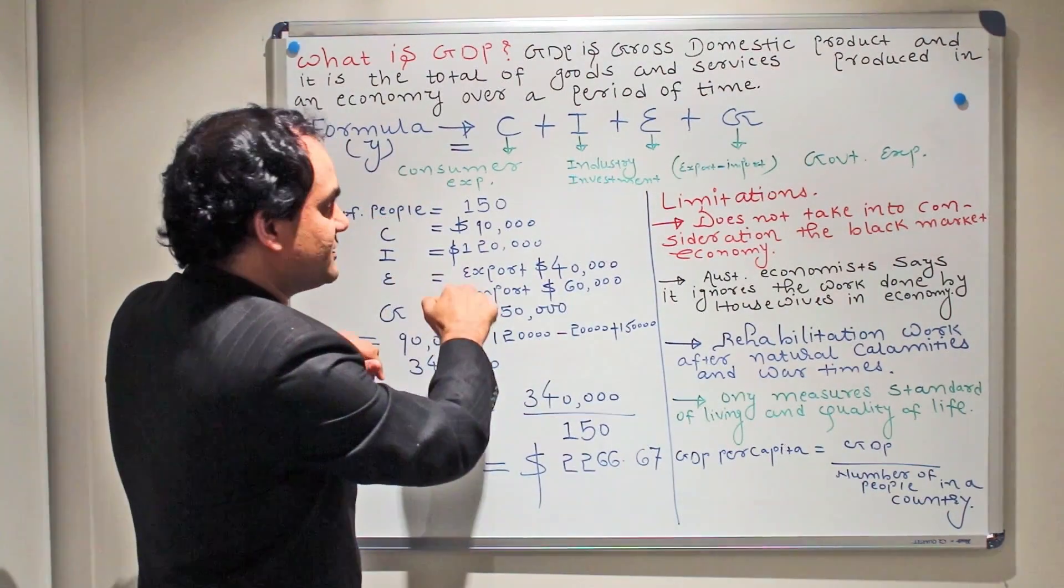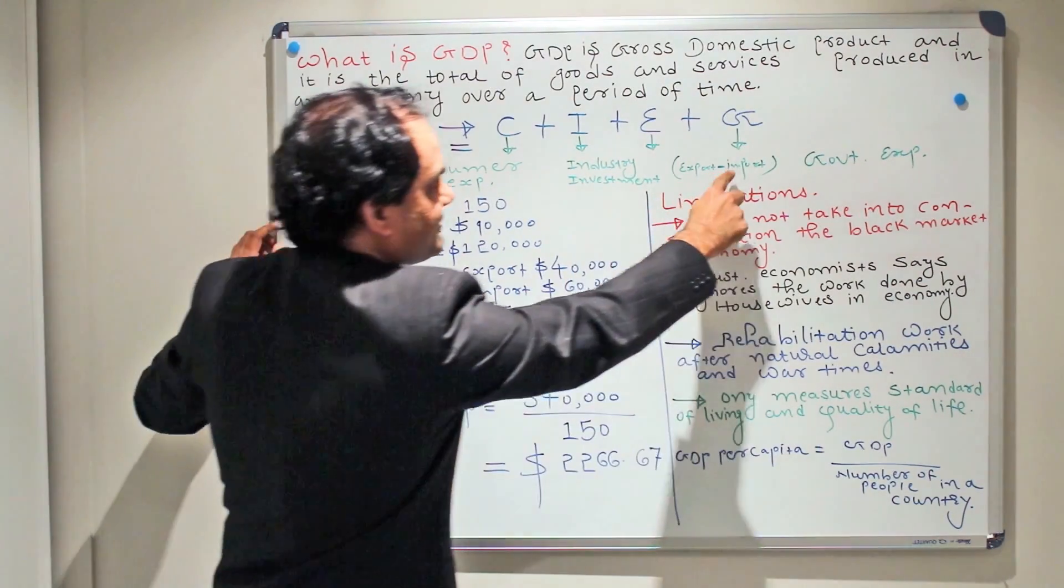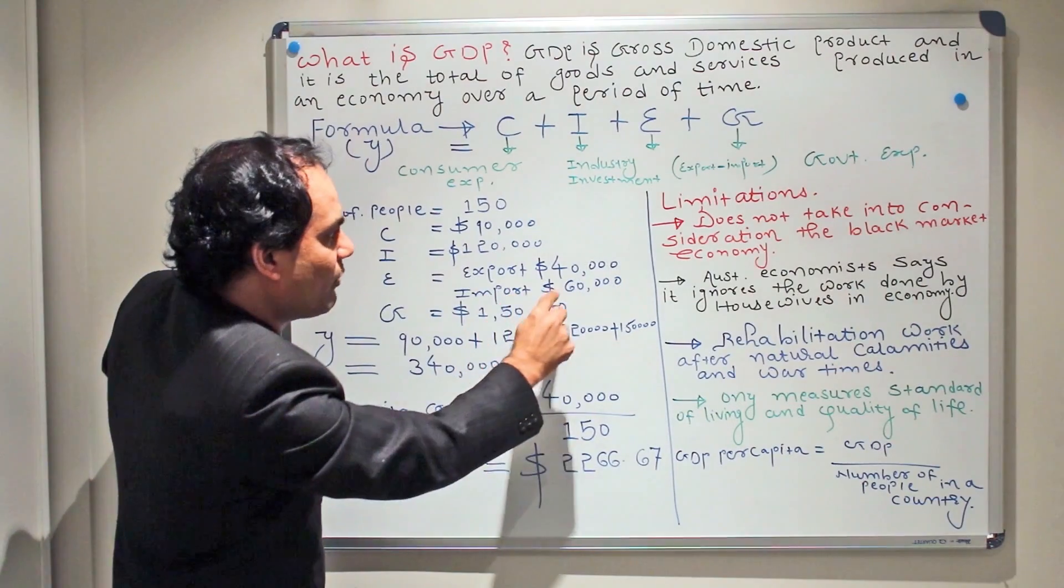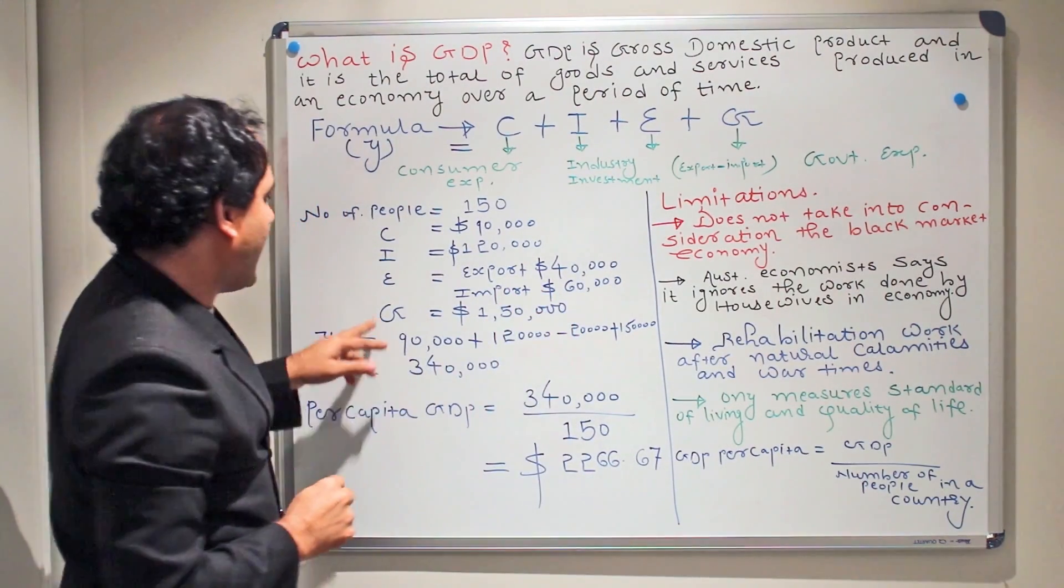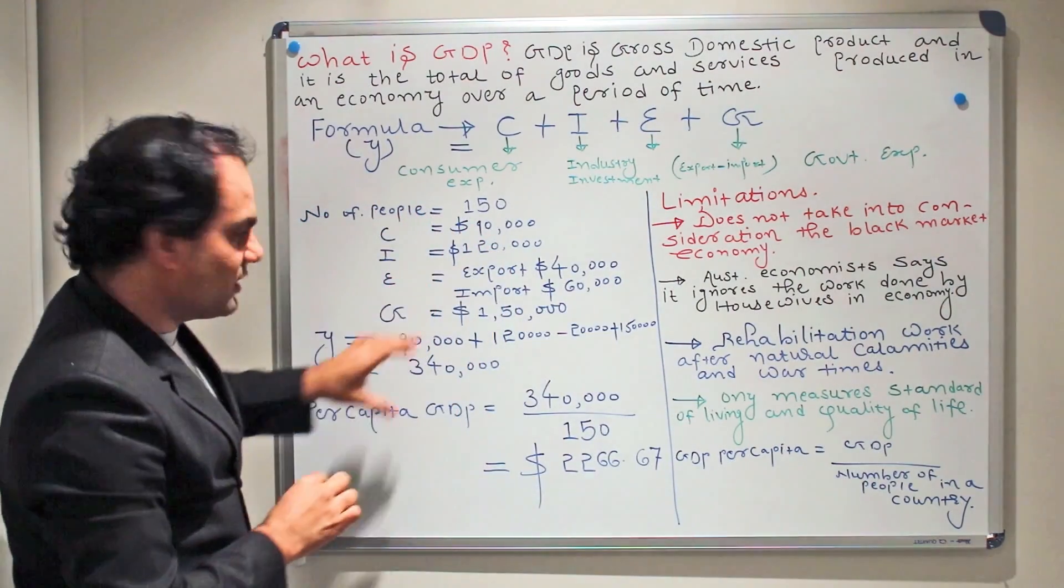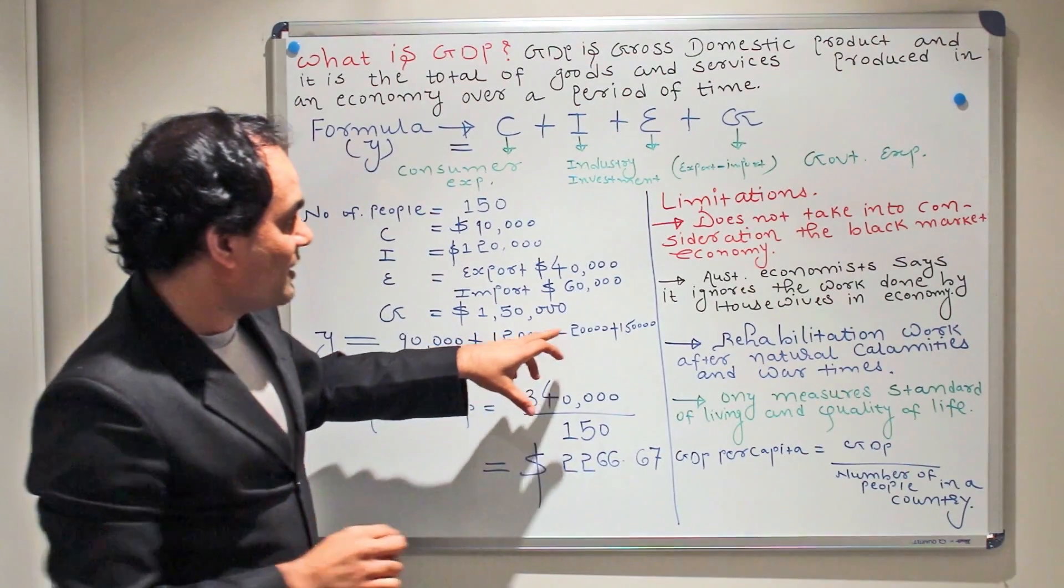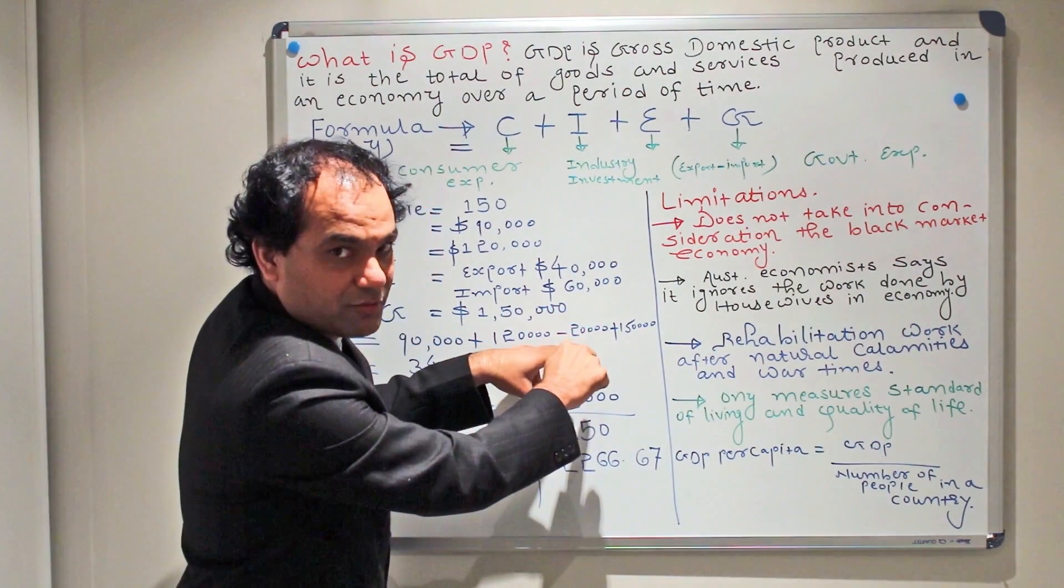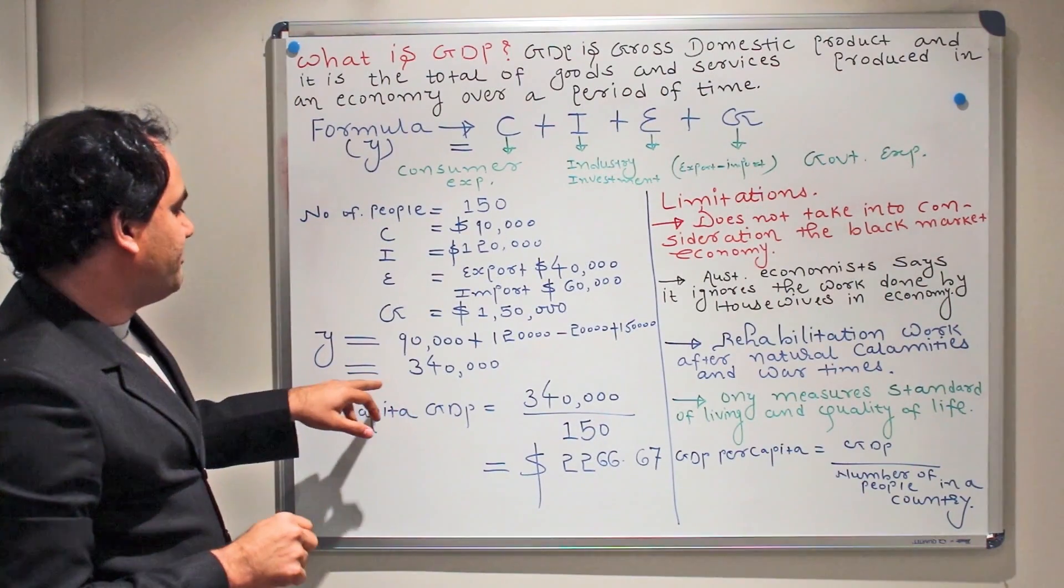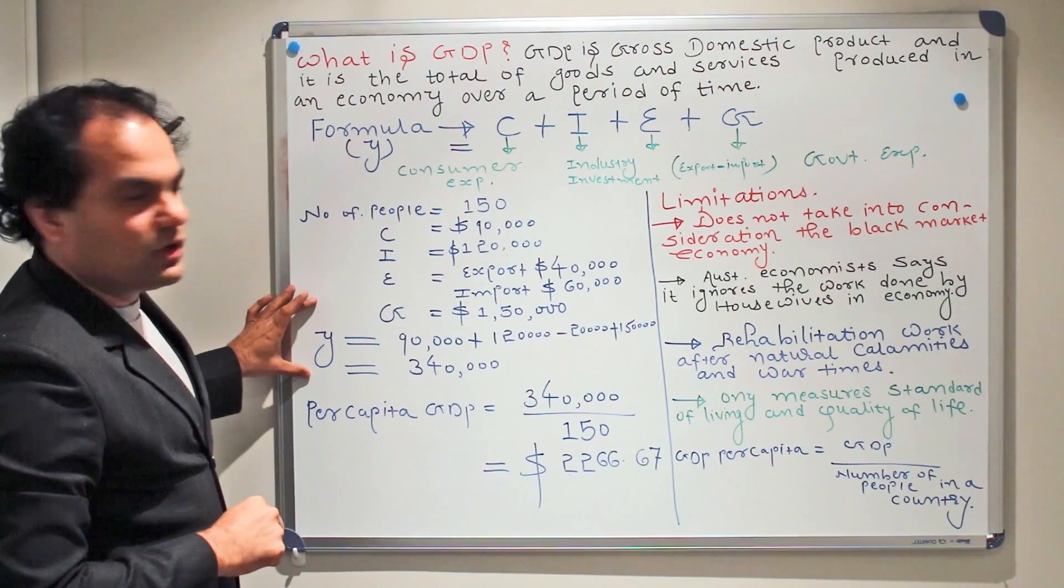Keep these figures in mind. Export is $40,000 and import is $60,000, so in this scenario, import is greater. We will have minus $20,000 here. Government expenditure is $150,000. When we combine all these figures and put it in the equation, it comes as $90,000 + $120,000 - $20,000 + $150,000. So we will get a GDP figure of $340,000.